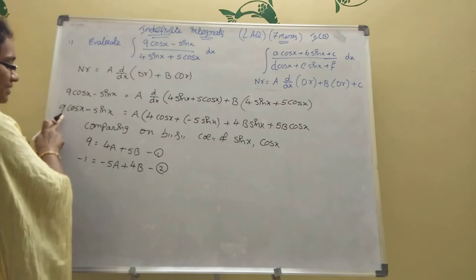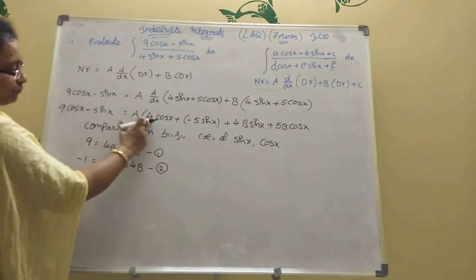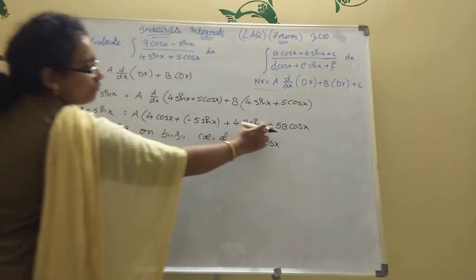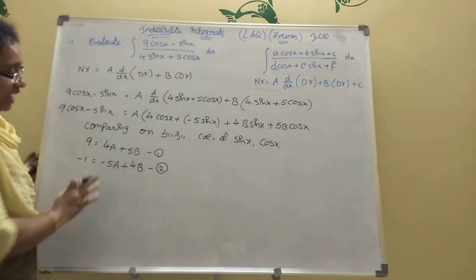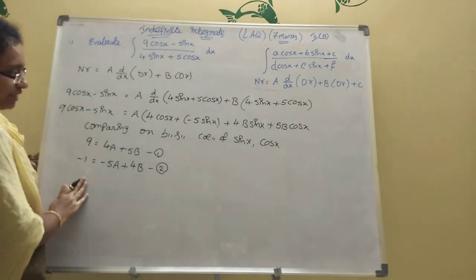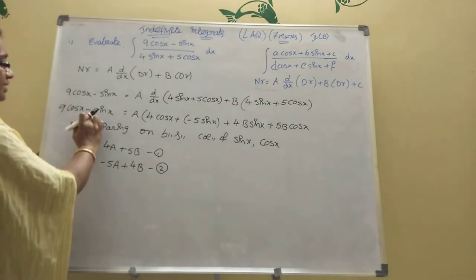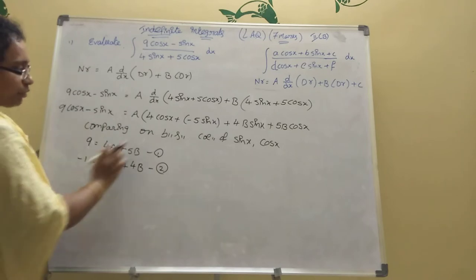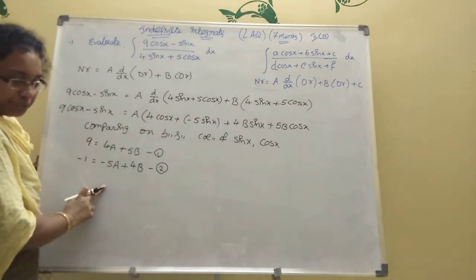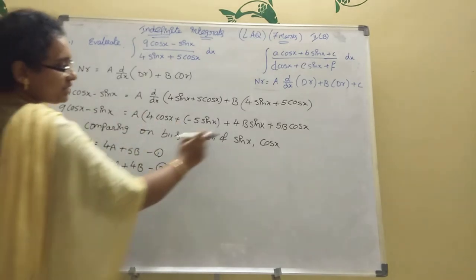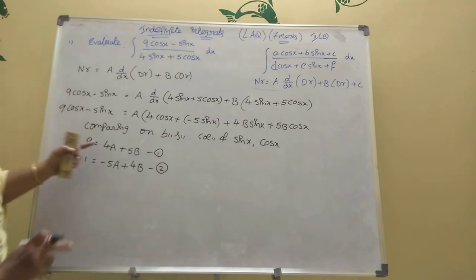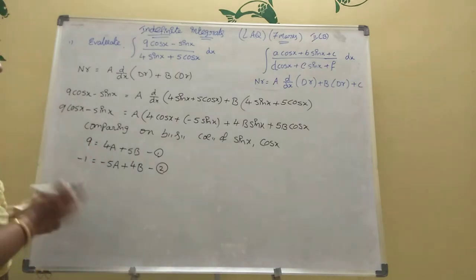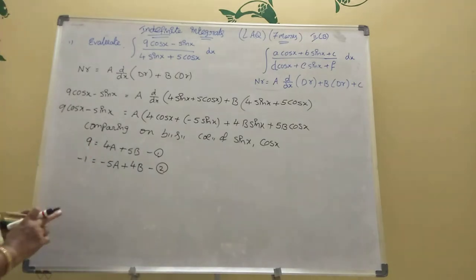So our two equations are: equation one — cos x coefficient: 9 equals 4A plus 5B; equation two — sin x coefficient: minus 1 equals minus 5A plus 4B. Now we solve to get A and B values.